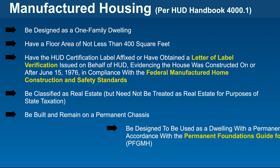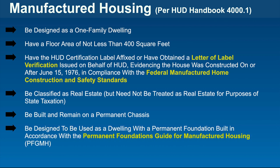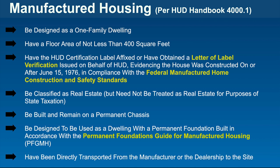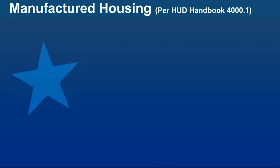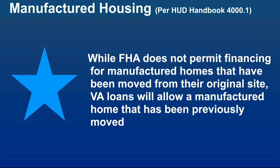The home must also be designed to be used as a dwelling with a permanent foundation built in accordance with the Permanent Foundations Guide for Manufactured Housing, and have been directly transported from the manufacturer or the dealership to the site. Please note that while FHA does not permit financing for manufactured homes that have been moved from their original site, VA loans will allow a manufactured home that has been previously moved.